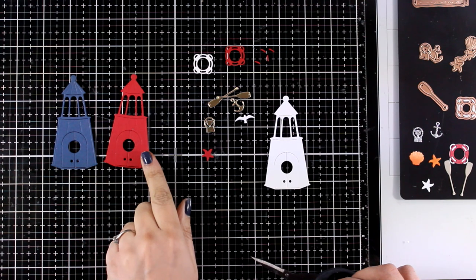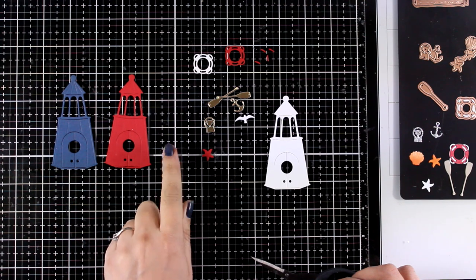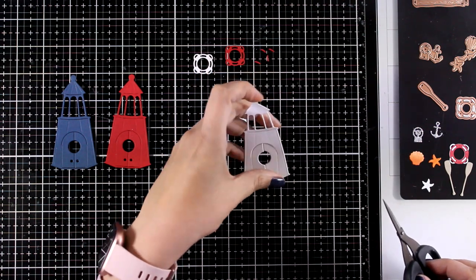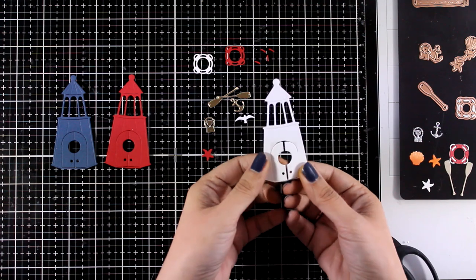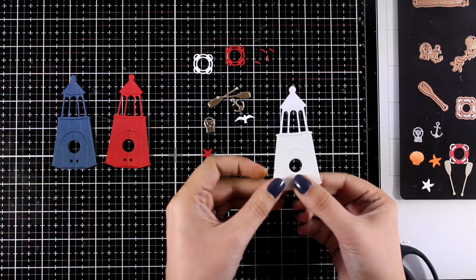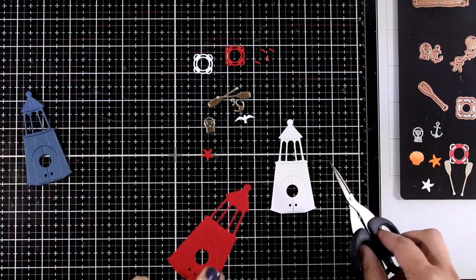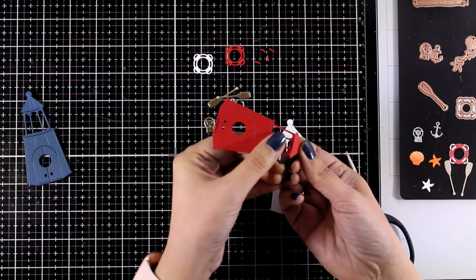So first of all I did die cut the lighthouse three times out of white, red and blue. I'm going to use the white one as the base and I'm going to cut out of the other two lighthouses bits and pieces so that I can stick them on top of the main lighthouse to create a multi-color look.